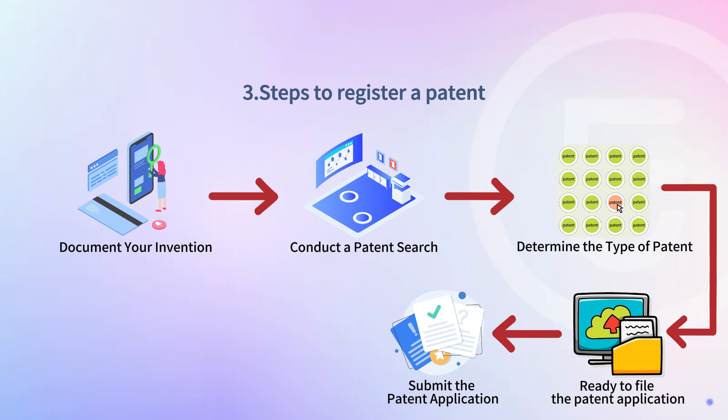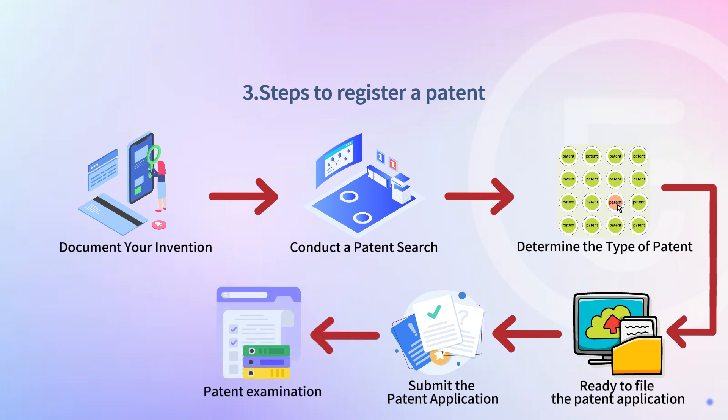You can access most patent information and application forms through the USPTO, including filing patent applications online. Your application must contain all required parts, such as abstract, background, detailed description, and the appropriate fees. You can also choose to file a provisional patent application or a non-provisional application. The latter gives you 12 months to develop your invention further before registering a formal patent. Once your application has been received by the USPTO, it will be reviewed for formalities and completeness. If your application contains non-informative information or is incomplete, you will receive a notice outlining the requirements to complete your application within the given time.